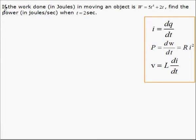In this example, we're asked to find the power given the work done. If the work done in joules in moving an object is W equals 5T to the 4 plus 2T, find the power in joules per second when T equals 2 seconds.